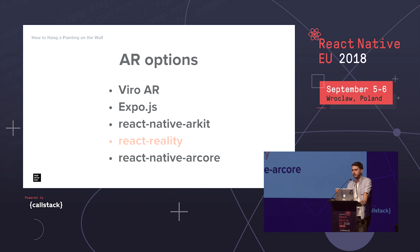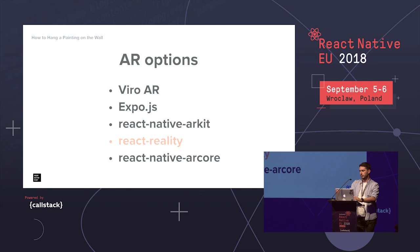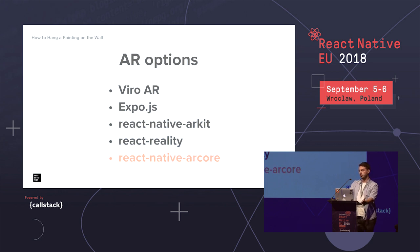Another ARKit-only solution is react-reality. It started as an attempt to rewrite react-native-arkit in Swift but quickly grew into its own independent library with its own API. I like the level of control it provides with carefully crafted components, but it lacks some essential ARKit features — for example, there was no hit testing until about a week ago. It's in active development and open to contributions. There's also react-native-arcore: currently two independent proof-of-concept implementations for Google's ARCore on React Native.